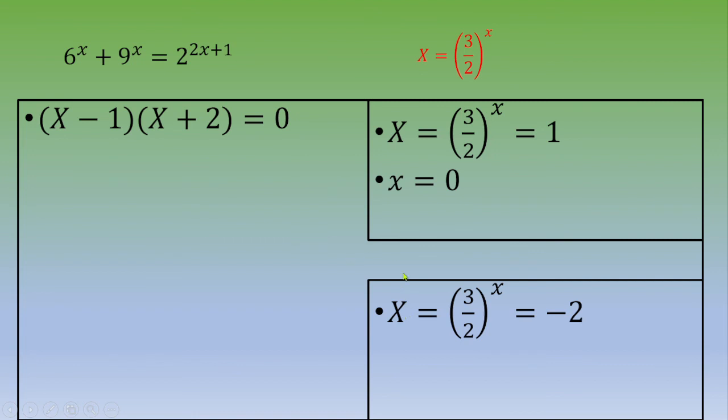For the second case, if capital X equals negative 2, it means 3 over 2 power x equals negative 2, and this is not possible to end up with a negative number. So the only solution is x equals 0.